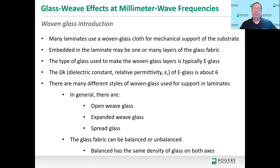The glass fabric normally used for the printed circuit board industry is E-glass, which is the most common type. The dielectric constant, or Dk, or relative permittivity — which I typically call Dk — for E-glass is typically around 6. There are different types of woven glass fabrics: open weave, expanded weave, and spread glass. Glass styles are also considered balanced or unbalanced, based on glass density on the different axes. If the glass density is the same on the x-axis as the y-axis, that's balanced; if different, it's unbalanced.